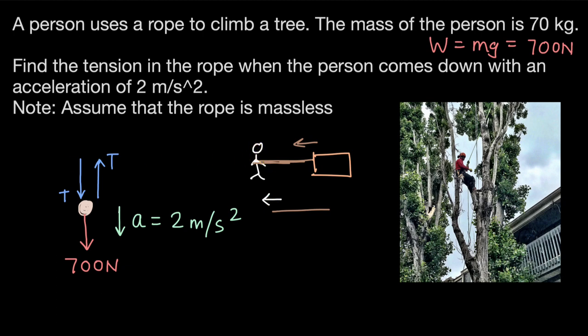And now if we draw the free body diagram of the person, according to Newton's third law, there will be an equal and opposite force to this force right here. And that will be to the right, which is acting on the person. This will be the tension force that the rope is exerting on the person.